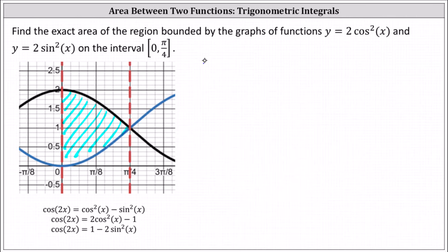The area equals the integral from 0 to π/4 of 2cos²(x) - 2sin²(x) dx. Let's factor out the 2. The integrand function is 2(cos²(x) - sin²(x)) dx.